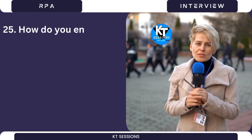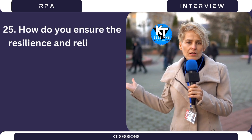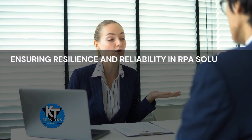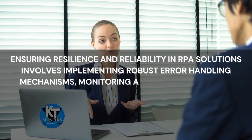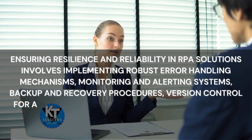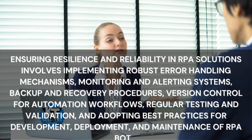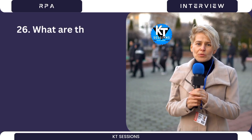Question 25: How do you ensure the resilience and reliability of RPA solutions? Ensuring resilience and reliability in RPA solutions involves implementing robust error handling mechanisms, monitoring and alerting systems, backup and recovery procedures, version control for automation workflows, regular testing and validation, and adopting best practices for development, deployment, and maintenance of RPA bots.